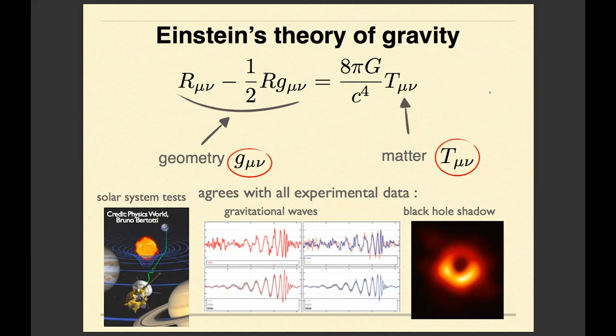The main equation of general relativity is here before your eyes. On the left hand side, we have geometry, which is space-time curvature. On the right hand side, we have material content of the universe, of the world.